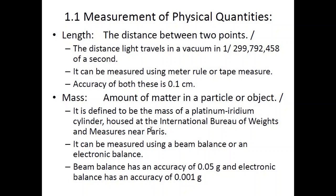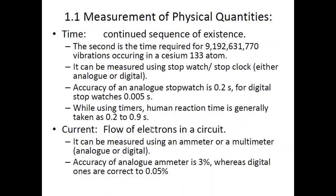Mass is the amount of matter in a particle or object. By modern physics standards, it is defined as the amount of matter in a platinum-iridium cylinder housed at the International Bureau of Weights and Measures near Paris — all other 1 kg masses worldwide are exact replicas of that sample. It can be measured using a beam balance (accuracy 0.05 g) or an electronic balance (accuracy 0.001 g).